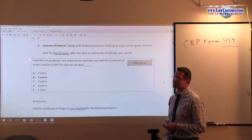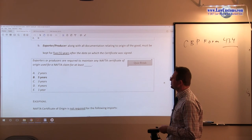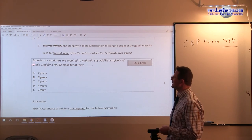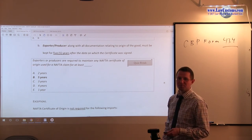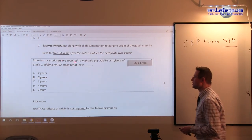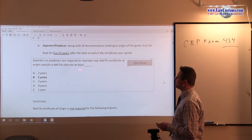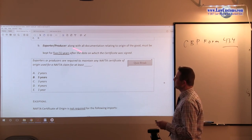Customs also tested on exporter and the five-year rule with respect to exporter. And it was relatively simple and straightforward. Exporter or producers are required to maintain any NAFTA certificate of origin useful enough to claim for at least five years.